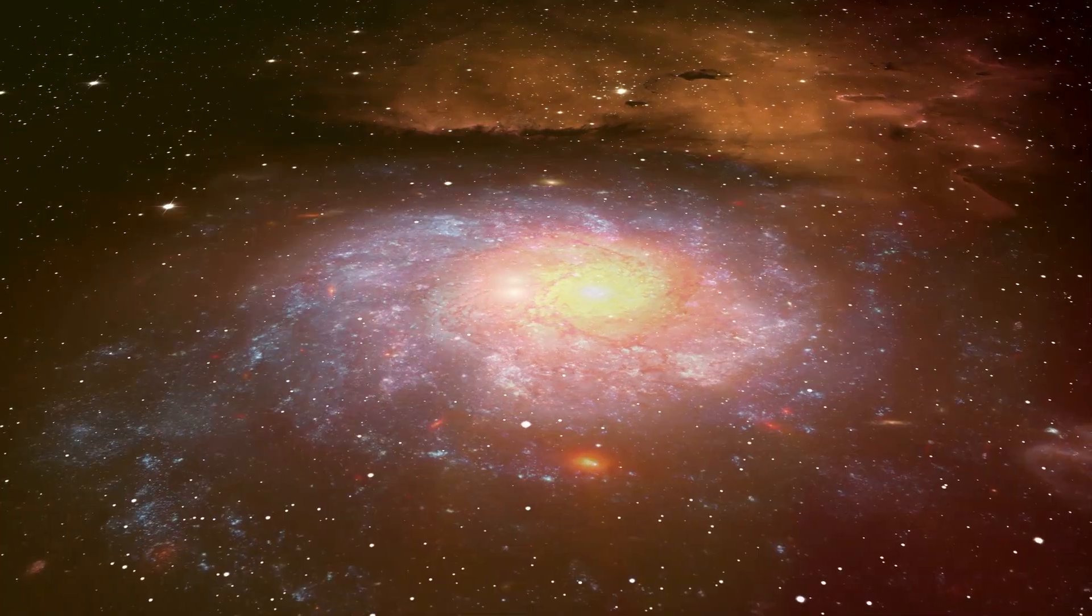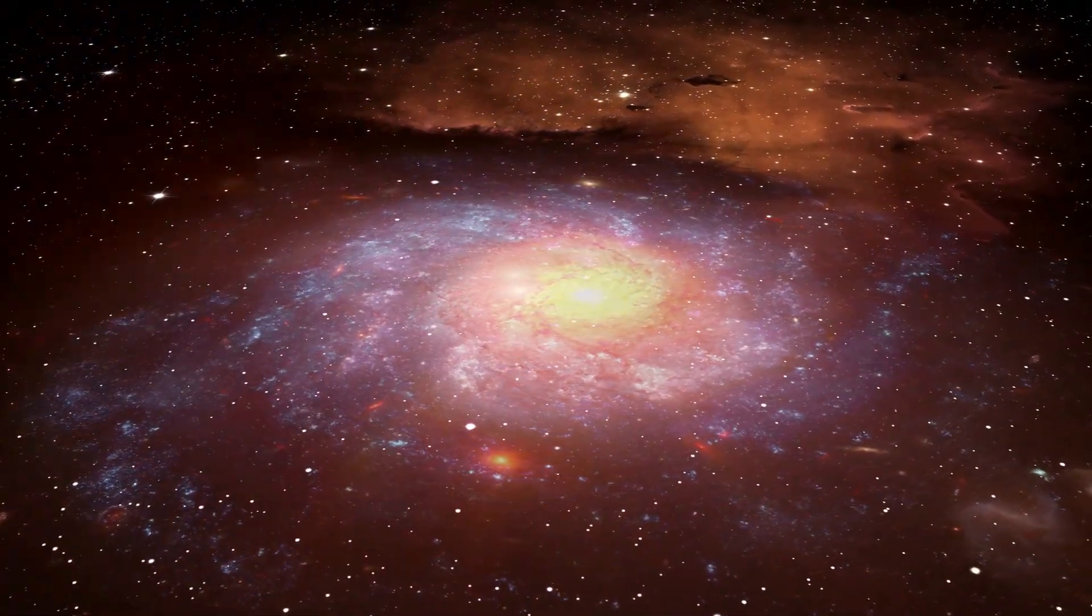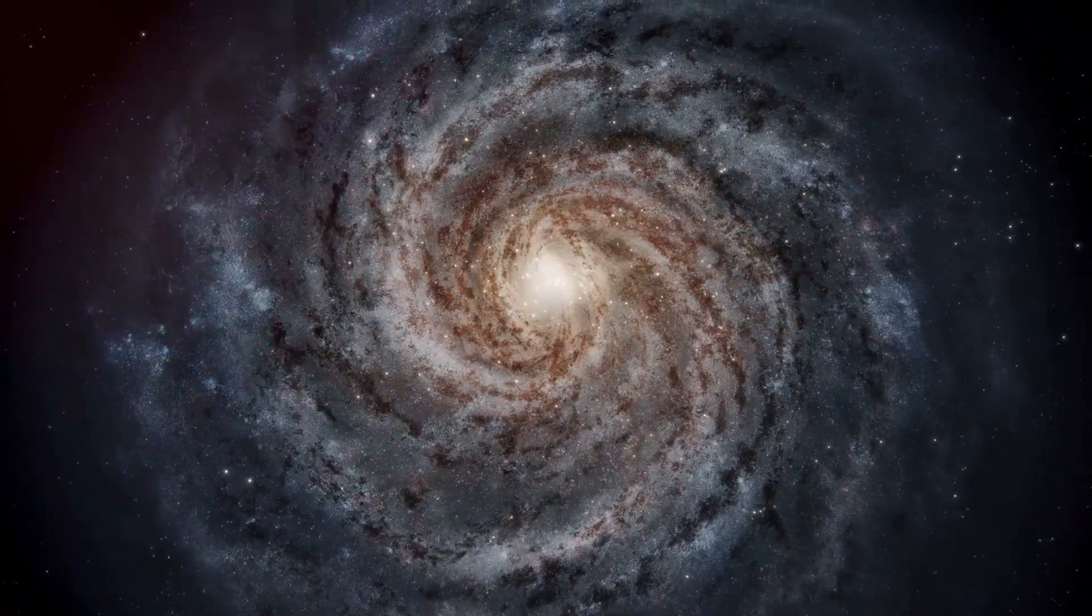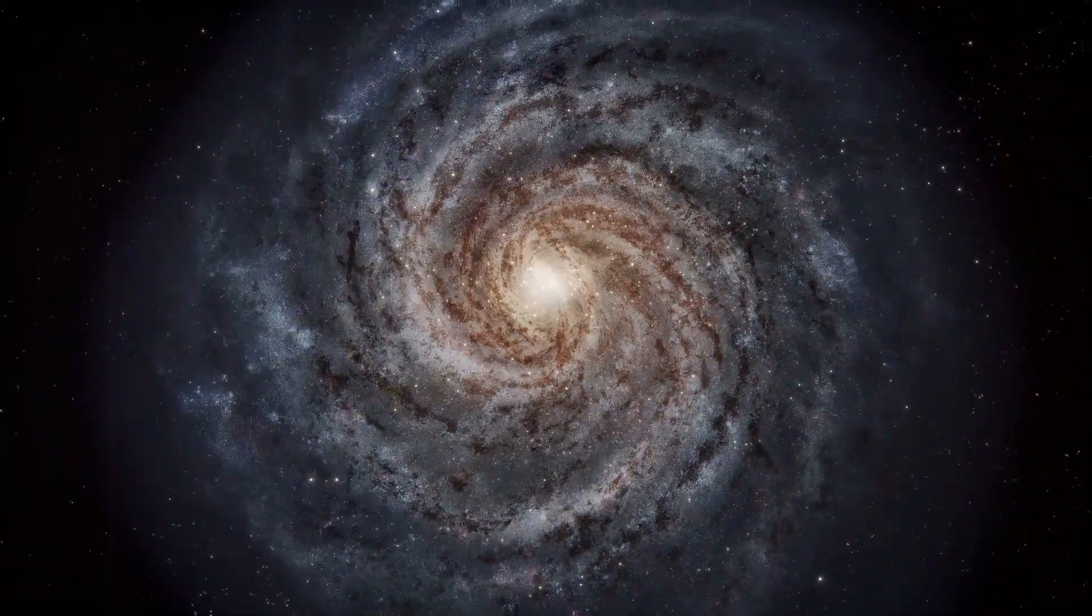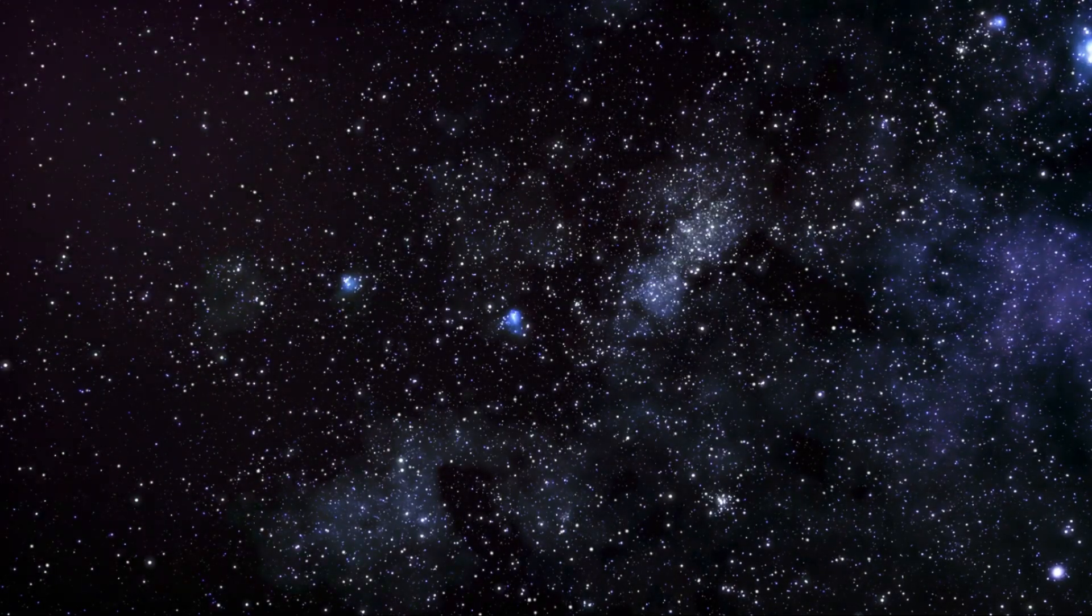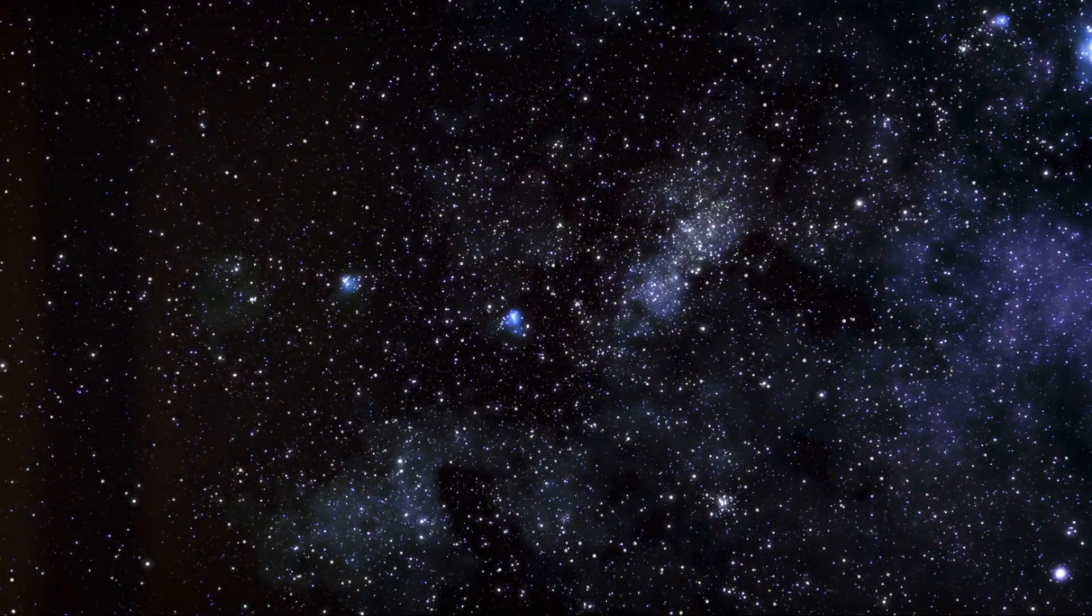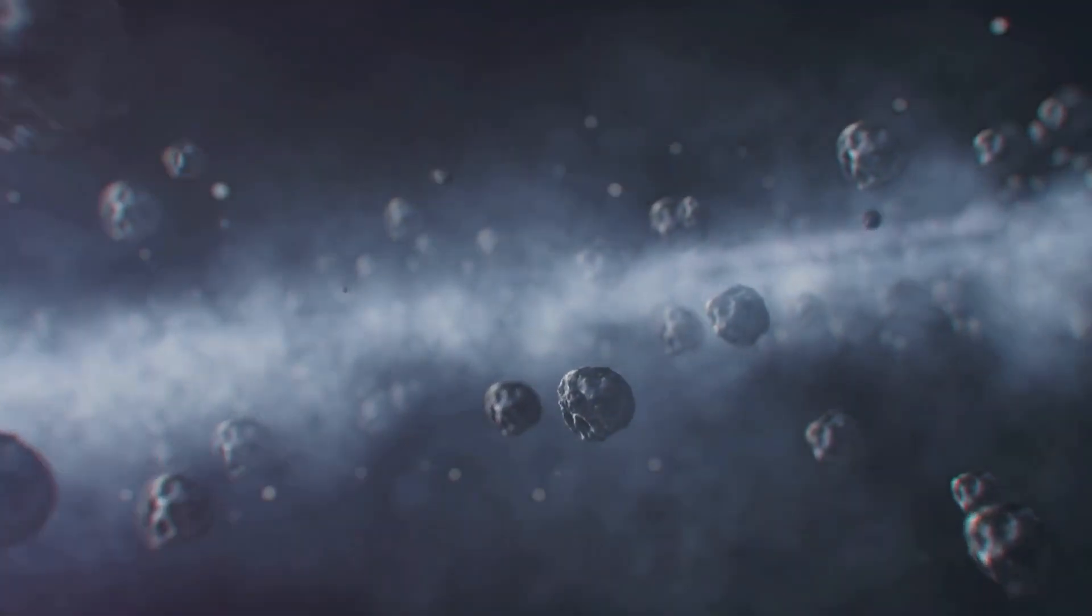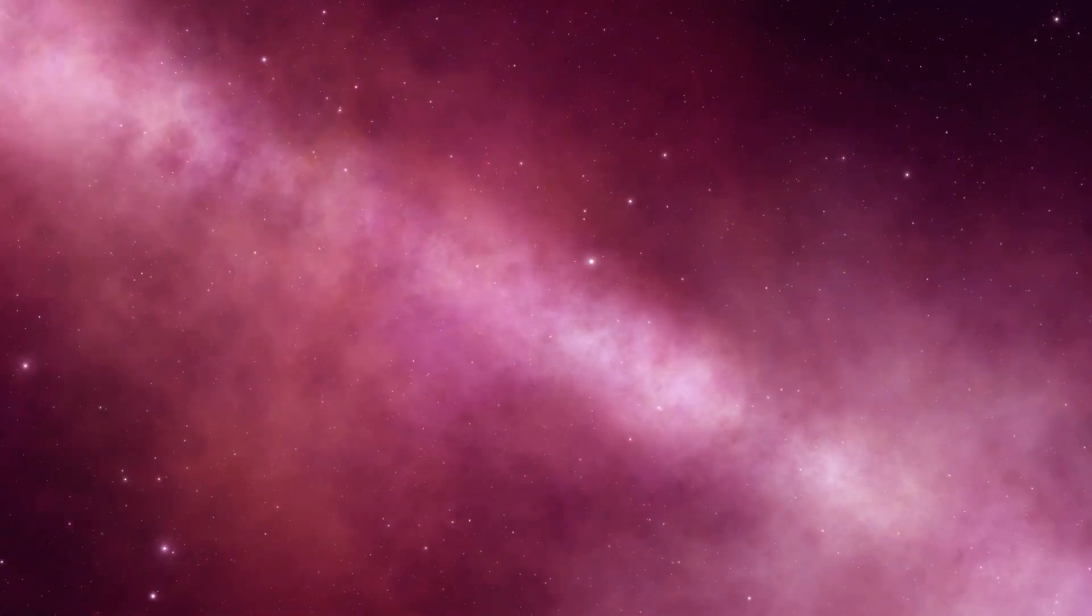The Milky Way is a barred spiral galaxy. Picture a central bulge with arms spiraling outwards like a pinwheel. We're located in one of those arms, about 26,000 light-years from the galactic center. Now, that might seem far, but in cosmic terms, we're practically downtown. Our galaxy is a bustling, dynamic place. It's filled with gas, dust, and roughly 200 to 400 billion stars. And that's not even counting the countless planets, asteroids, comets, and other celestial objects that call the Milky Way home.